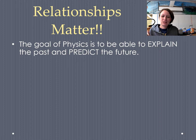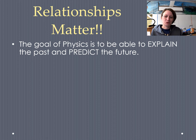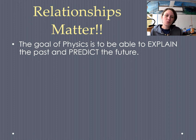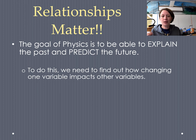The goal of physics is to be able to explain things we've noticed happening and also to be able to make predictions about what things are going to happen in the future. Mathematical relationships are the tool we're going to use to do all of this, because they fundamentally help us see how changing one variable impacts every other variable.